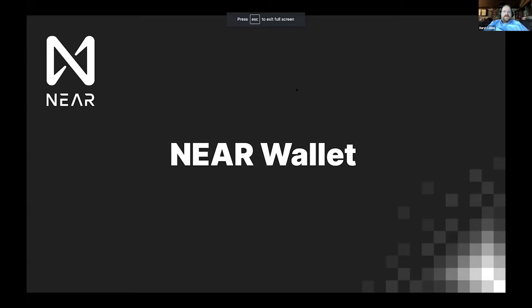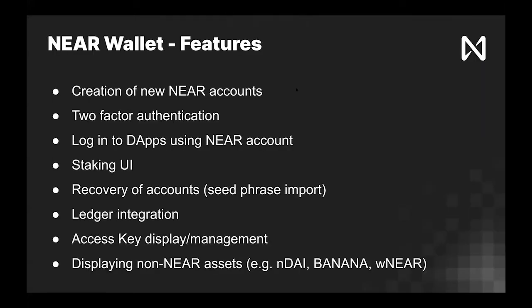What is the wallet? What are the features from the user's perspective — what are the benefits of the wallet and why does it exist? I have some bullet points covering the high-level features the wallet provides. The most obvious one that most people are familiar with is creating new named accounts on NEAR. Anytime you want to create an account with your name dot near, you log into the wallet web interface and click 'create new account.' The entire flow for managing the creation of named accounts exists as part of the wallet.